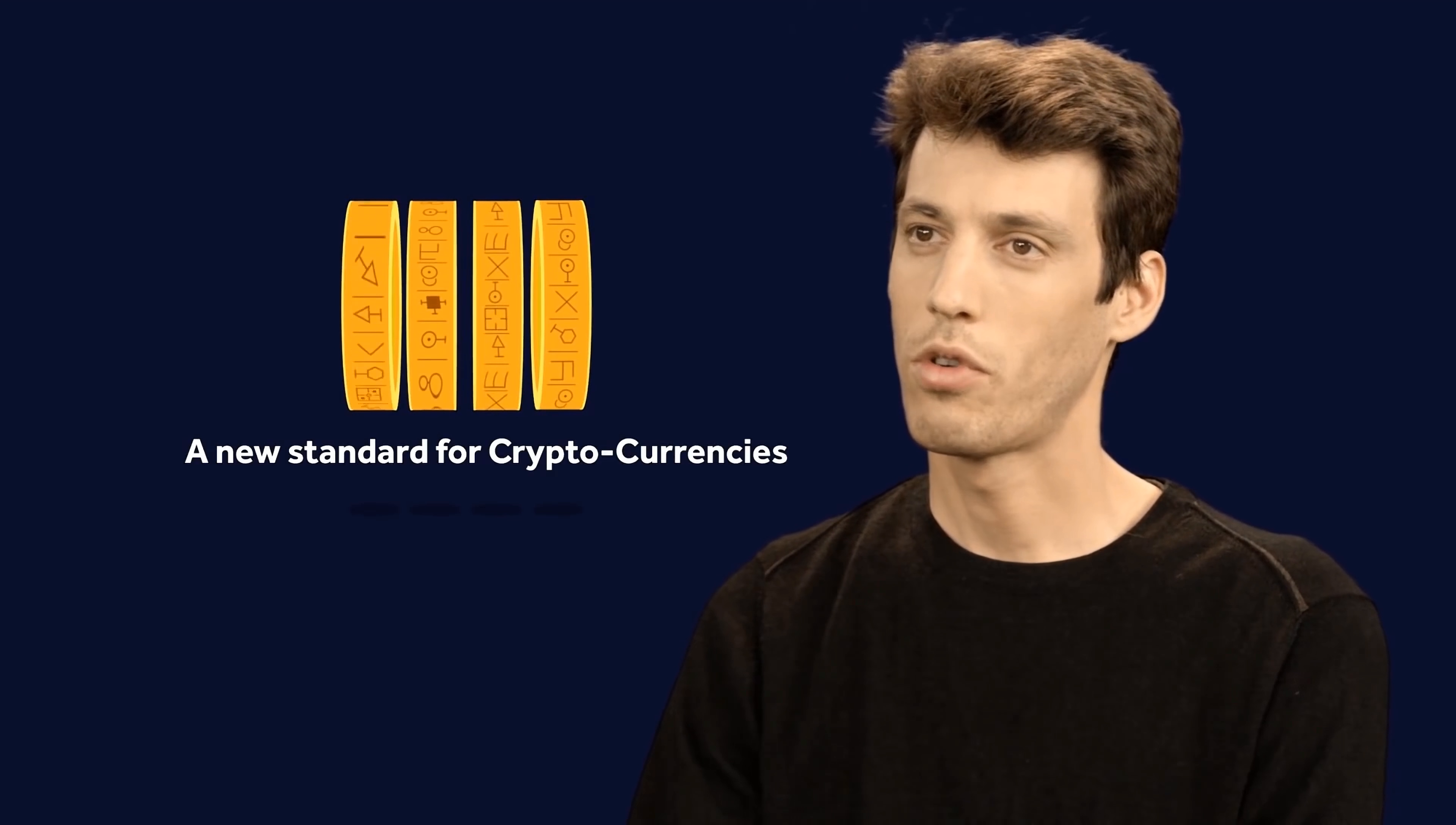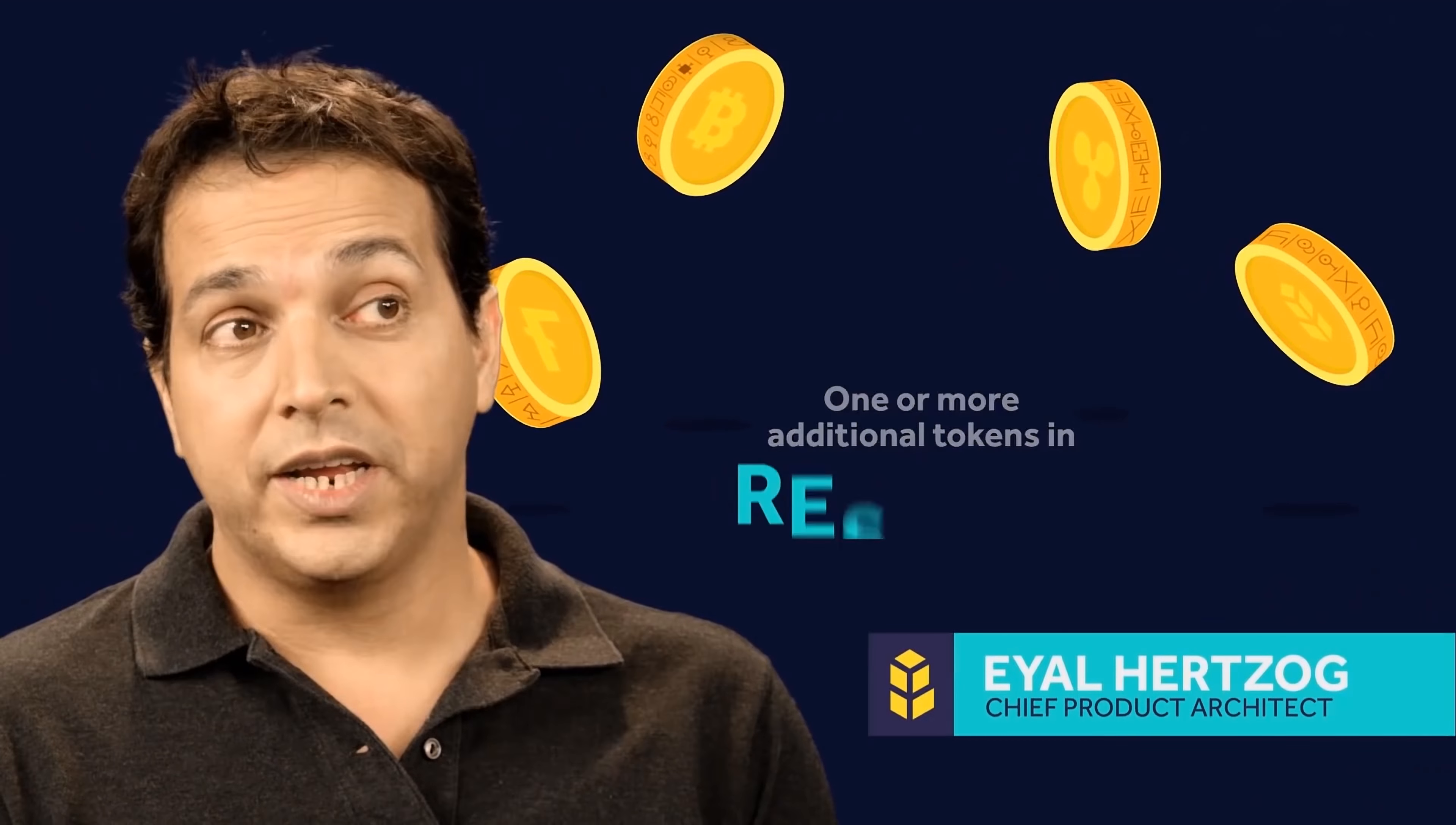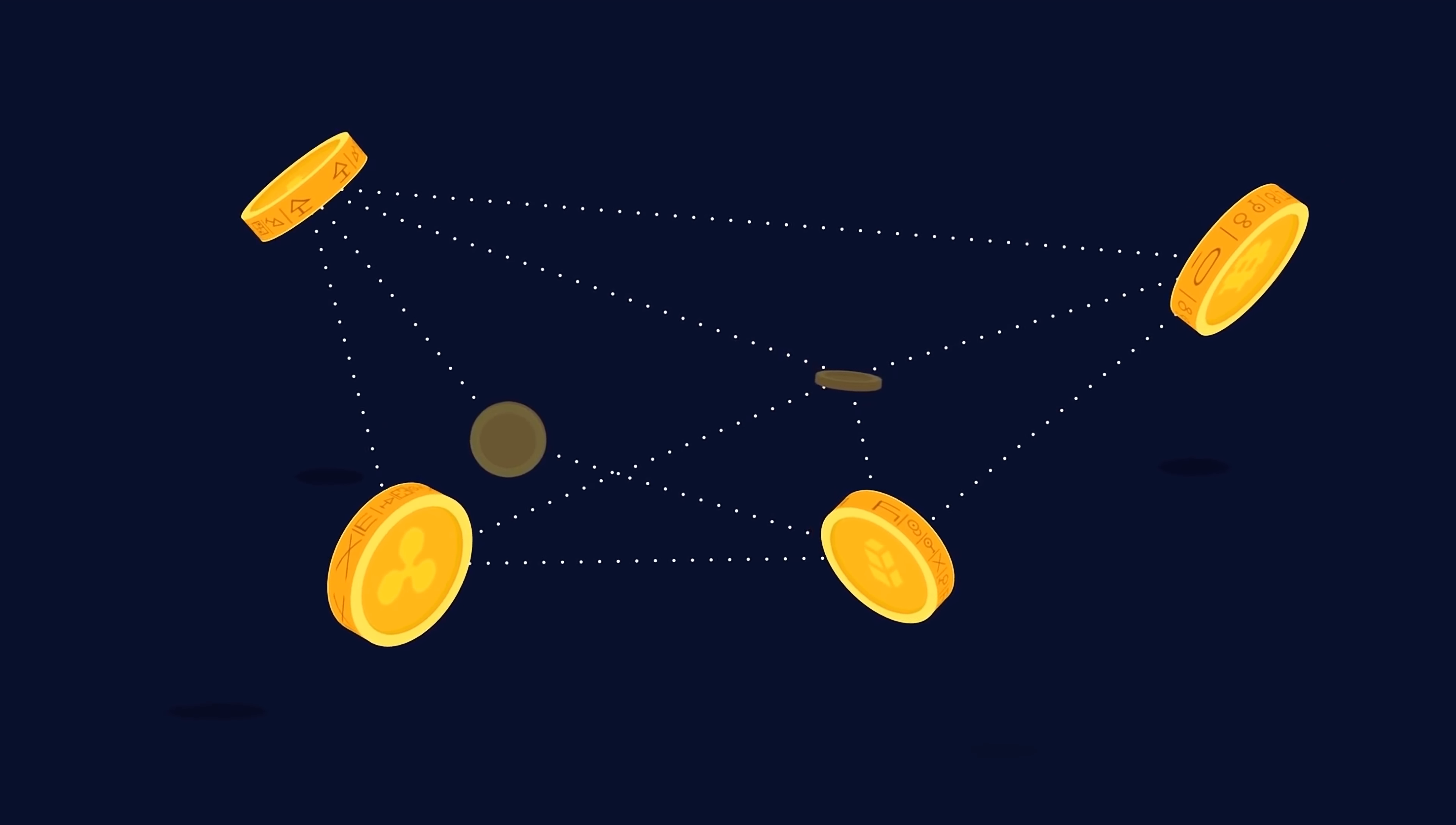You can think of the Bancor Protocol as a new standard for cryptocurrencies, one that enables any token to hold one or more additional tokens in reserve, creating relationships between those tokens and allowing conversion between tokens and new kinds of economic models.